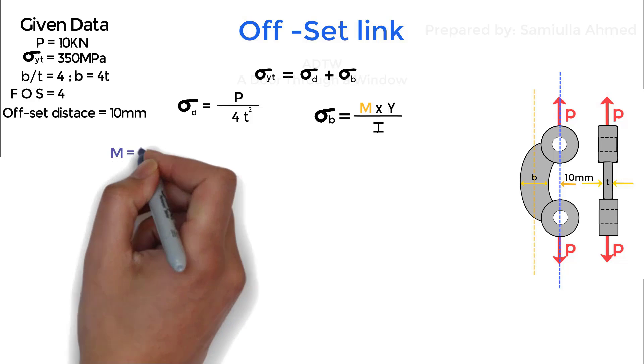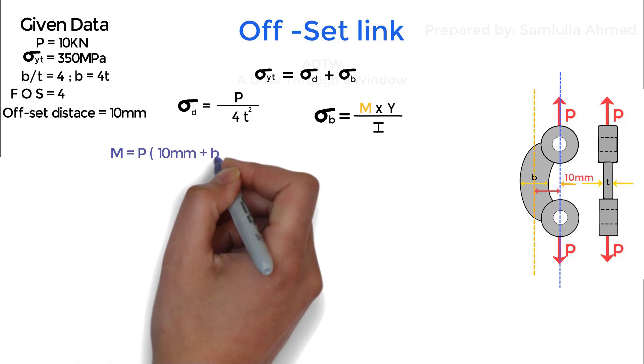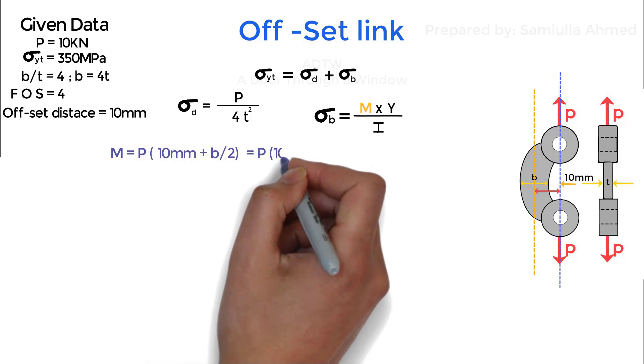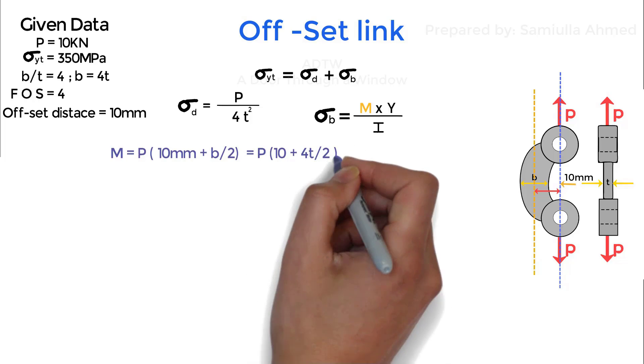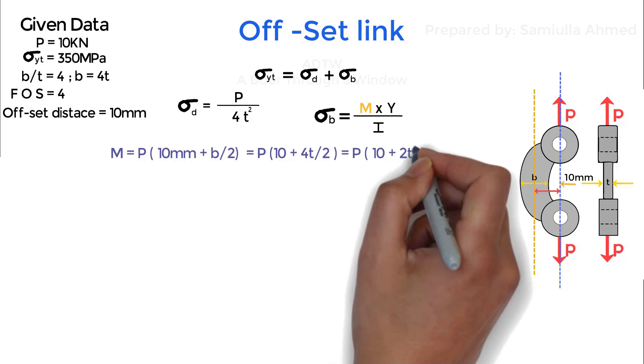Where M is bending moment and is equal to force P into the total offset distance, which is 10 mm plus width divide by 2. Since we know width is 4 times thickness, after substituting and simplifying we have M is equal to P into 10 mm plus 2 times t.